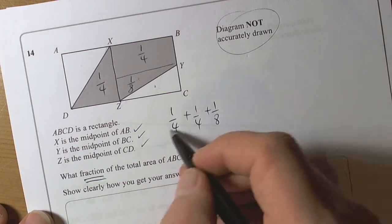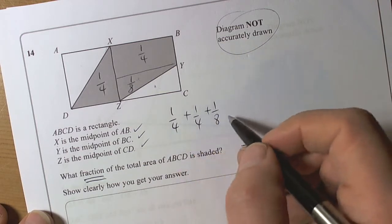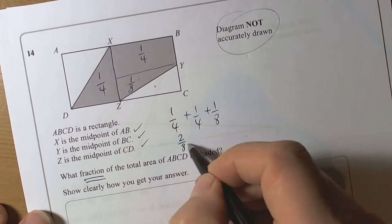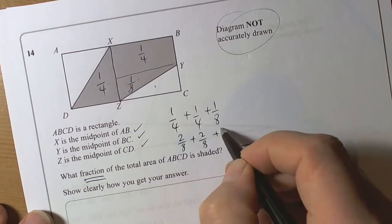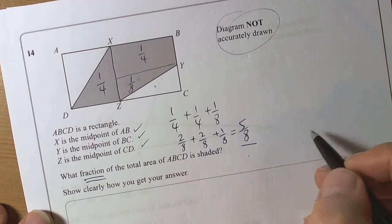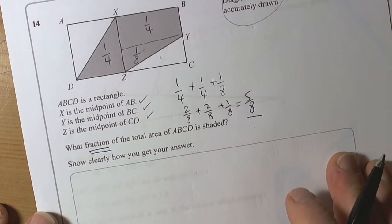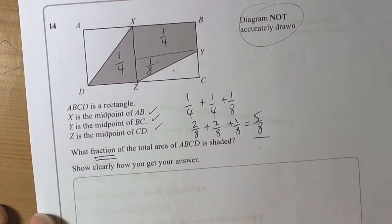And because when we're adding fractions, we need to have common denominators, then it's like saying two eighths, plus two eighths, plus one eighth, that equals five eighths. So the answer for this question is five eighths.